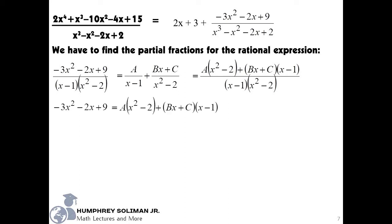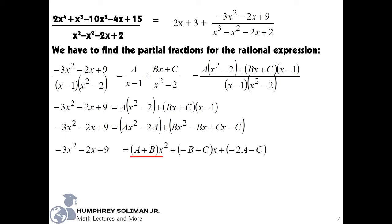And then, we can start simplifying our right side by distributing a to the quantity x squared minus 2, and by multiplying the quantities bx plus c and x minus 1. After that, we can group together the terms with x squared, the terms with x, and the constant terms.